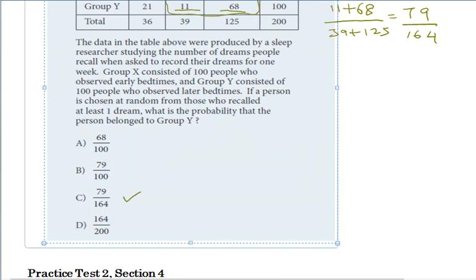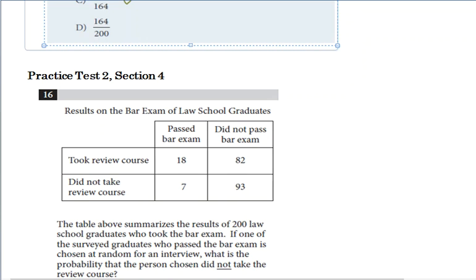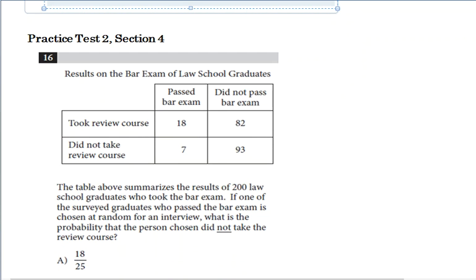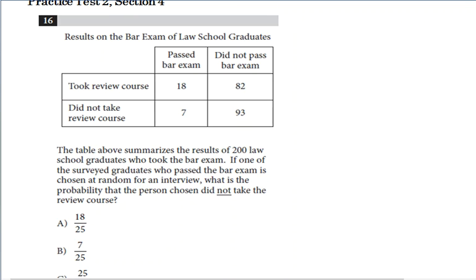Let's go to the next question. Given the rate at which I'm going, I'm just going to do the first two questions and leave the rest to you as exercises. You could try those other problems and check the answers at the end. So let's look at the next one. The table above summarizes the results of 200 law school graduates who took the bar exam.